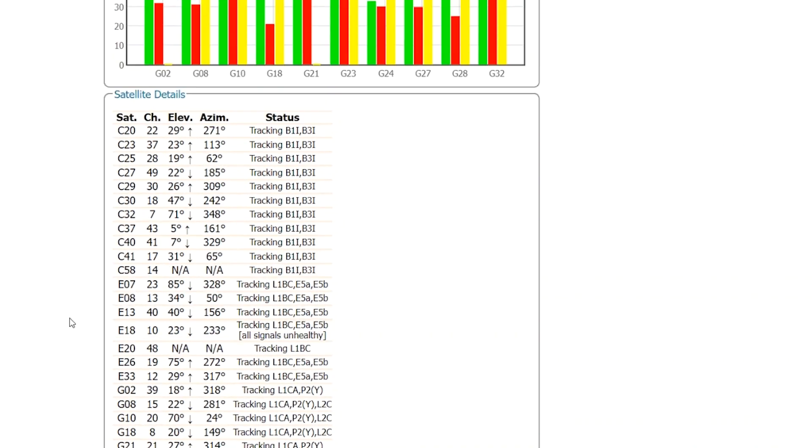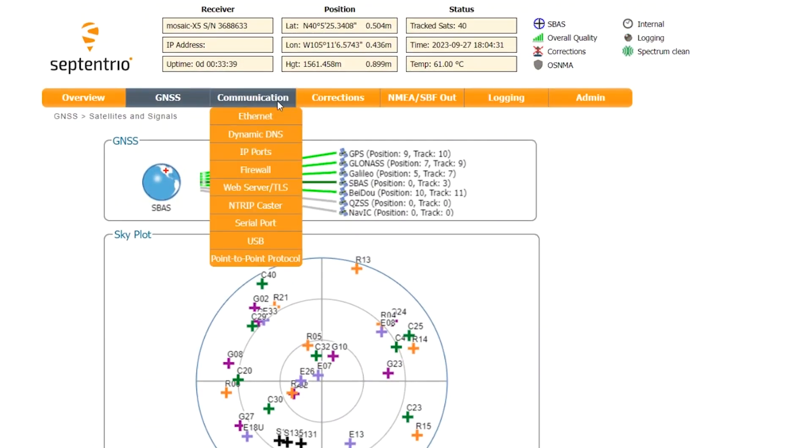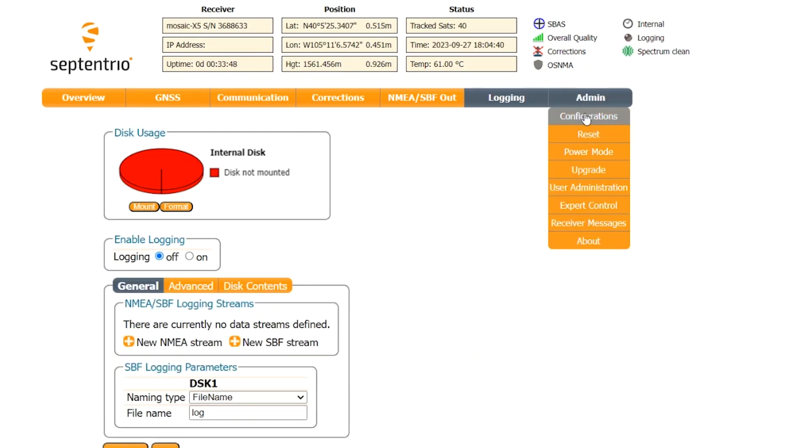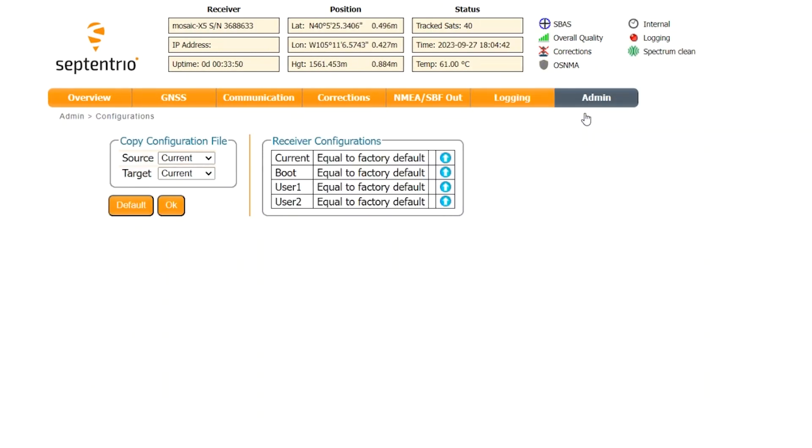There's also communications pages, corrections pages, NMEA pages, logging pages. Now, you can see here that I don't have an SD card mounted. And, under the admin drop-down, there are multiple pages, allowing you to configure the Mosaic X5 exactly how you need for your specific project or situation. This is extremely cool.